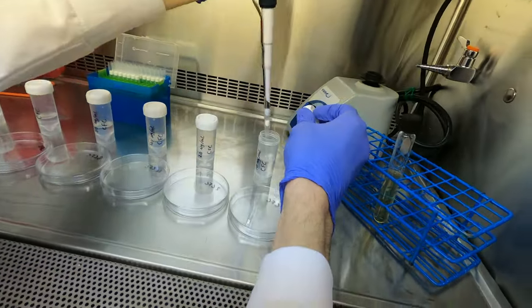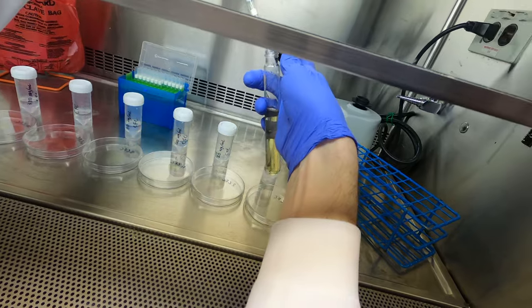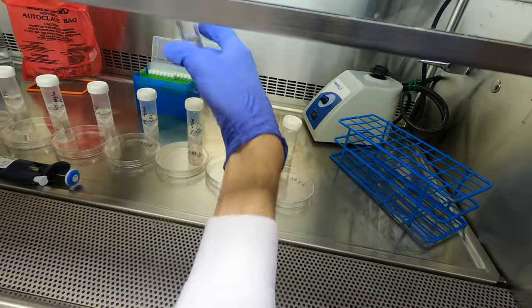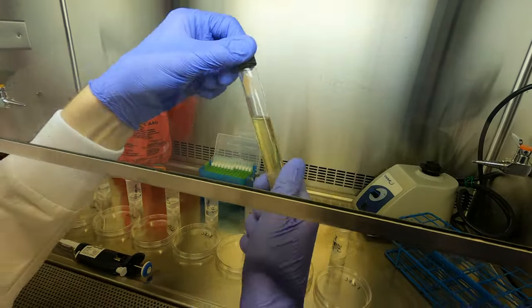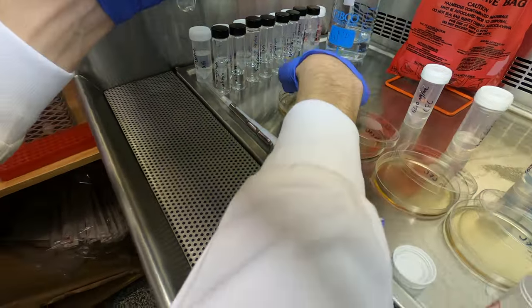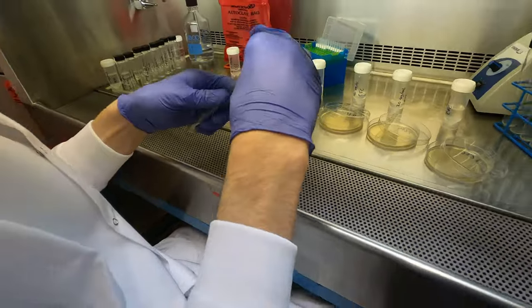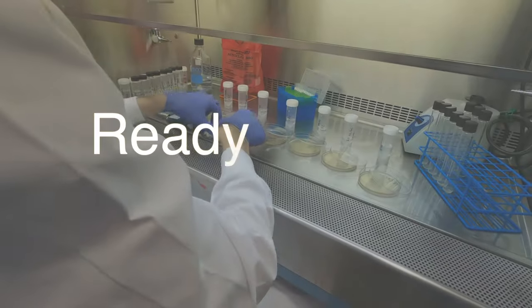Once the antibiotic has been added, we carefully invert the tube several times to mix the contents thoroughly, and then pour out the agar into a pre-labeled petri dish. Our plates are then left to solidify with the lids ajar. We do this in the biosafety cabinet to minimize the possibility of contamination.